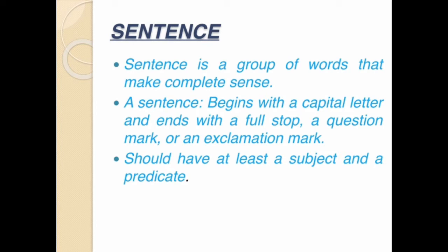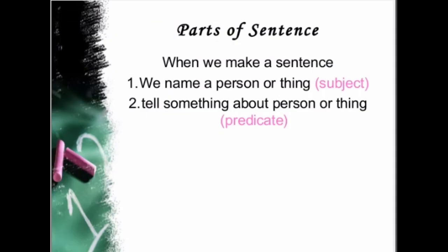A sentence should have at least a subject and a predicate. Now what are subject and predicate? Basically, subject and predicate are two parts of a sentence. We name a person or thing — that is the subject. And the predicate tells us something about the subject. Let's get it clear through an example.